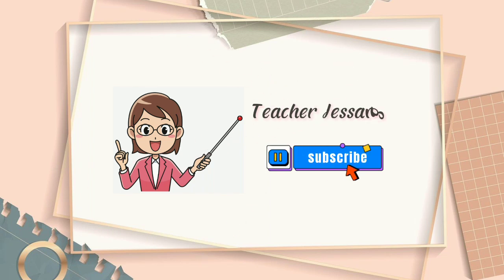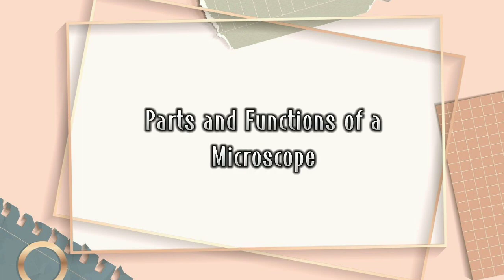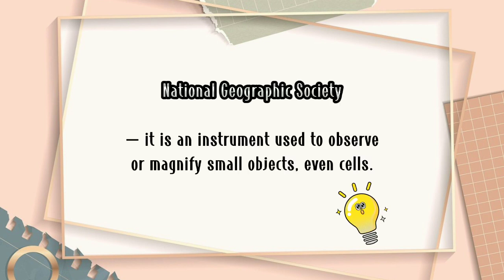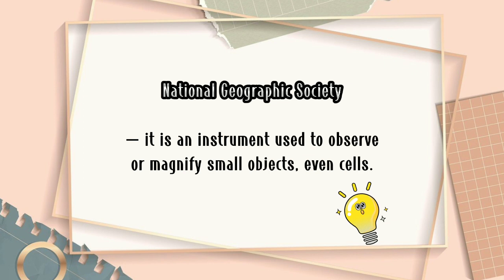What's up guys, I'm Teacher Nisang, your teacher for today's video. Our topic for today is all about parts and functions of a microscope. But first, let's define microscope. According to the National Geographic Society, a microscope is an instrument that can be used to observe small objects, even cells.